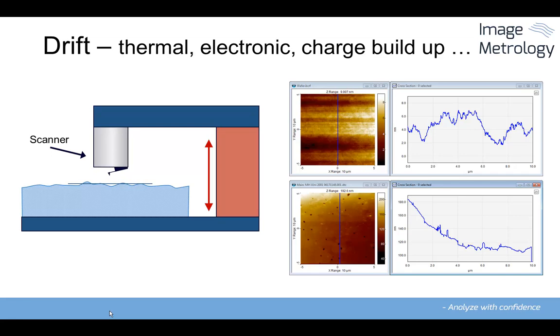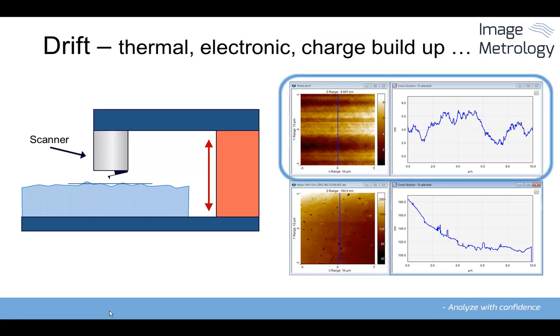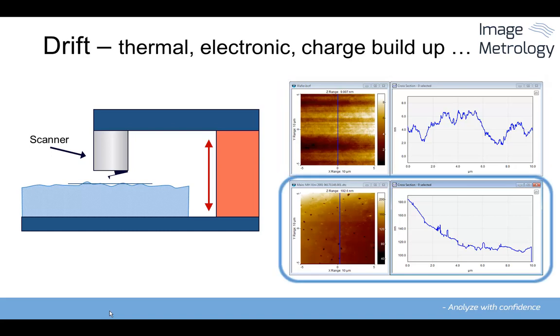In this example, we see the effect of thermal drift. In the topmost image, the drift varies in direction and speed during the scan, causing a random waviness in the y-direction. In the bottom image, we see what often happens when a sample is mounted and scanning started before the system has been allowed to stabilize - a decreasing drift speed during the scan.